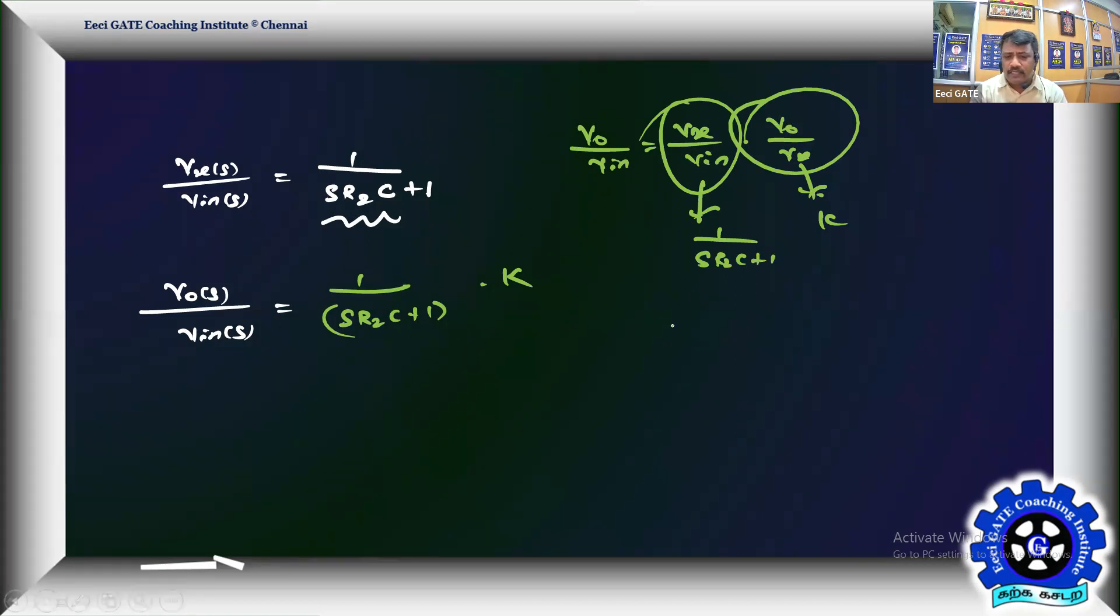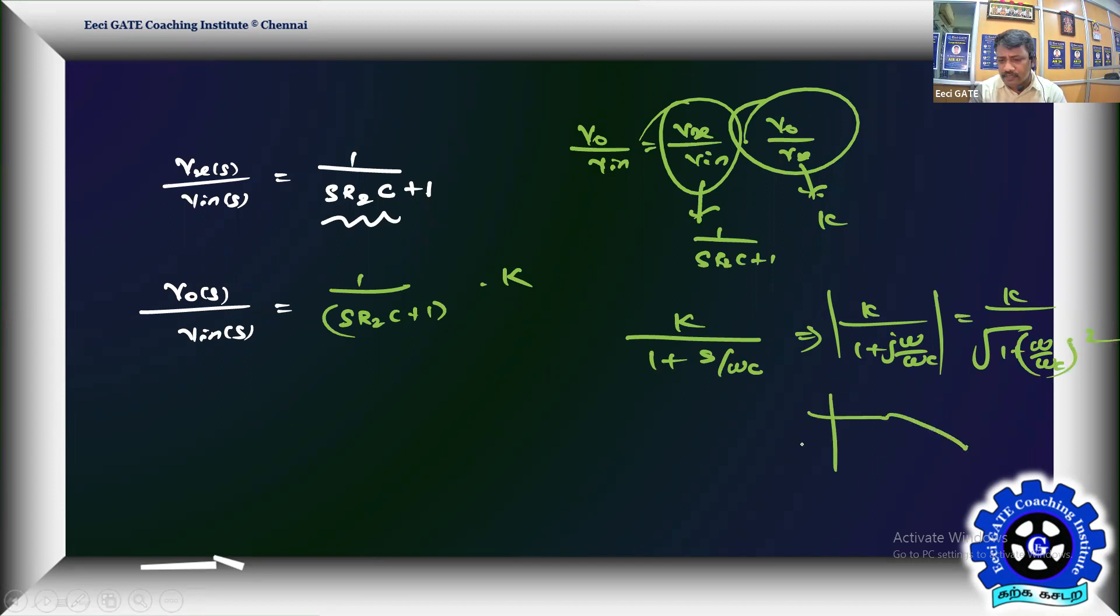Hope you remember, a standard low pass should have a transfer function something like k/(1 + s/ωc). Let s equal to jω, then you'll get jω/ωc. If you go for the modulus, you'll end up with k/√(1 + (ω/ωc)²). That is going to produce such a low pass response with MdB equal to 20 log k, with cutoff frequency equal to ωc. What is given? 20 log k is given for us.